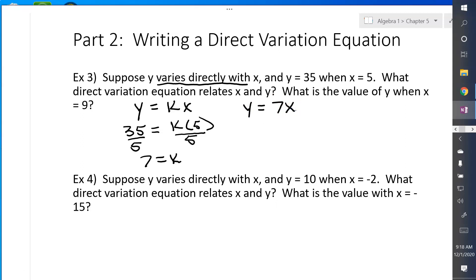And then it says, what is the value of y when x equals 9? So now I'm just going to put 9 in for x. So y equals 7 times 9. Y equals 63. So there's our two answers. Our equation is y equals 7x, and then y equals 63 when x equals 9.